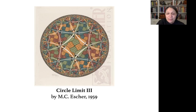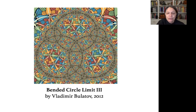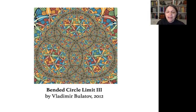As an example of how far mathematical art has come, here is a mathematical distortion of Escher's print by Vladimir Boltov. It has been mapped into three dimensions, distorted in hyperbolic three space, and projected back into two dimensions. I think this work would have delighted Escher.